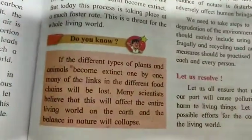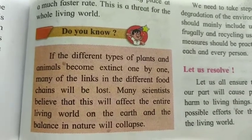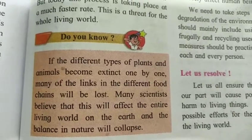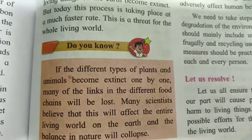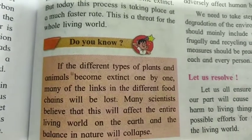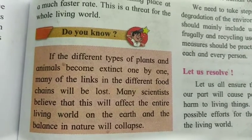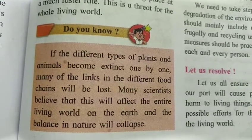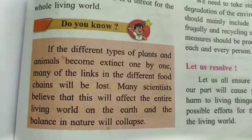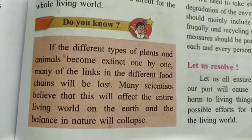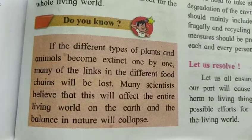If the different types of plants and animals become extinct — extinct means finished, gone — one by one, many of the links in different food chains will be lost. Many scientists believe this will affect the entire living world, and the balance in nature will collapse.